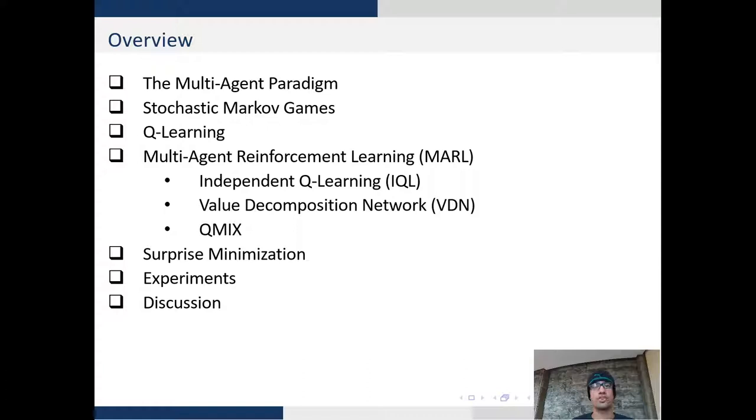We will be going over the multi-agent paradigm followed by stochastic Markov games and Q-learning which are used in multi-agent learning. We will then focus our attention to three specific algorithms which motivate collaboration in multi-agent learning.